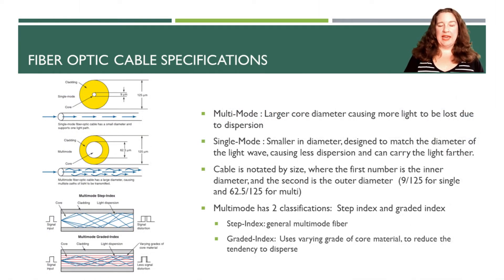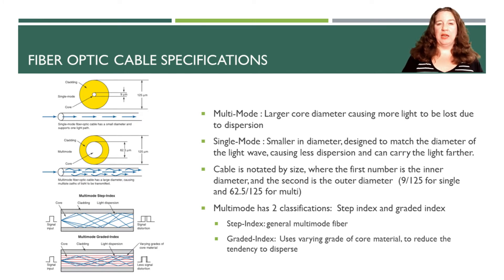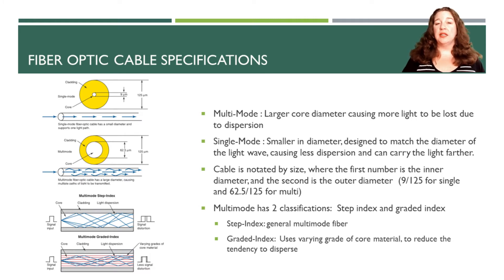We have two different types of fiber optic cable: single mode and multi-mode. Single mode is smaller in diameter — usually about 9 micrometers for the core — with a total cladding diameter of 125 micrometers. Single mode cabling is designed to match the diameter of the actual light wave, almost running like a laser. It goes straight through with less bouncing, which means less dispersion and the ability to carry light further.